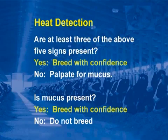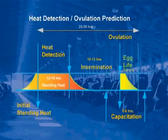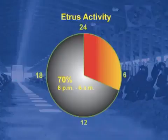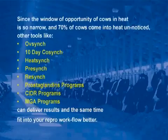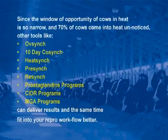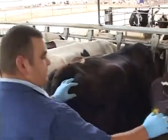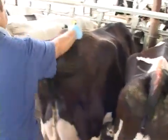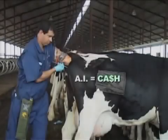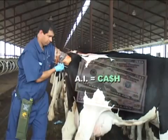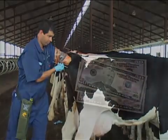Do not breed if signs are absent. Since the window of opportunity for cows in heat is very narrow and seventy percent of cows come into heat unnoticed, other tools like Off-Synch, 10-Day Co-Synch, Heat-Synch, Pre-Synch, Re-Synch, prostaglandin programs, CIDR programs, and MGA programs can all deliver results and fit into your reproductive workflow. Better, efficient heat detection will ensure you increase your pregnancy rates and cash flow.